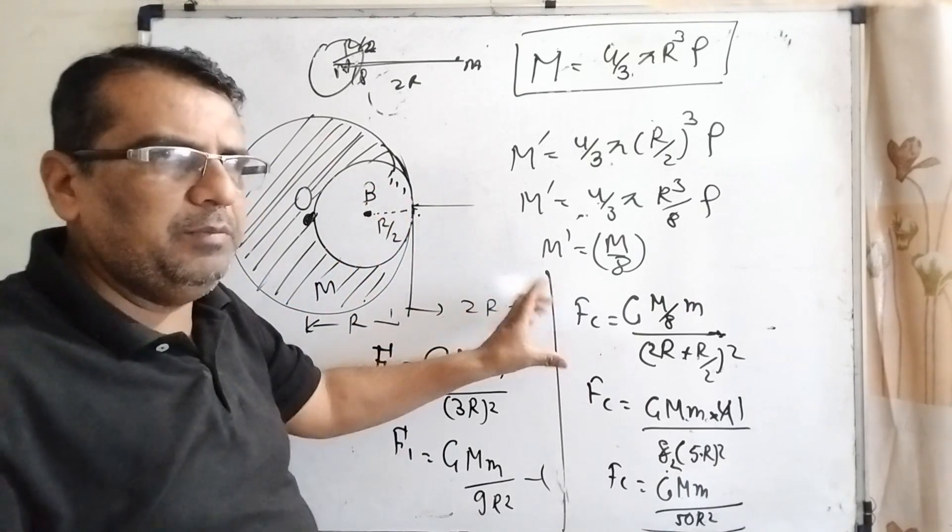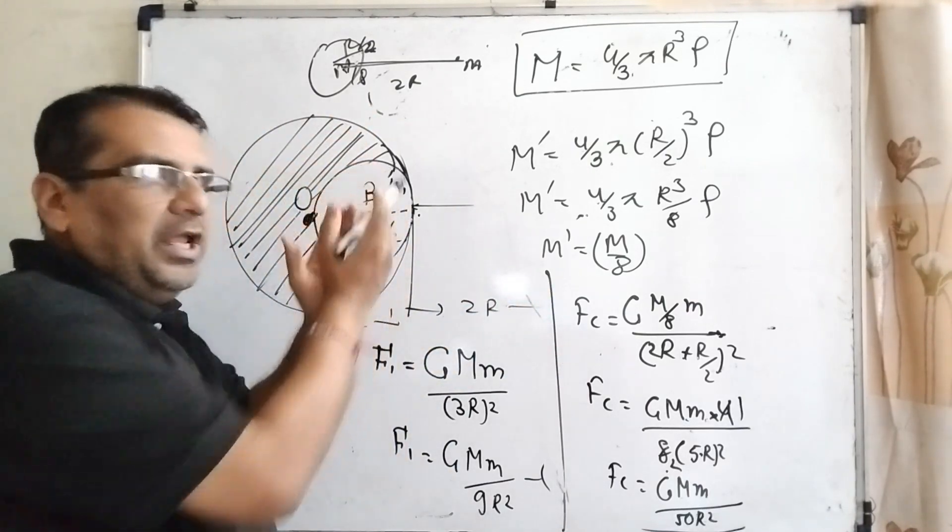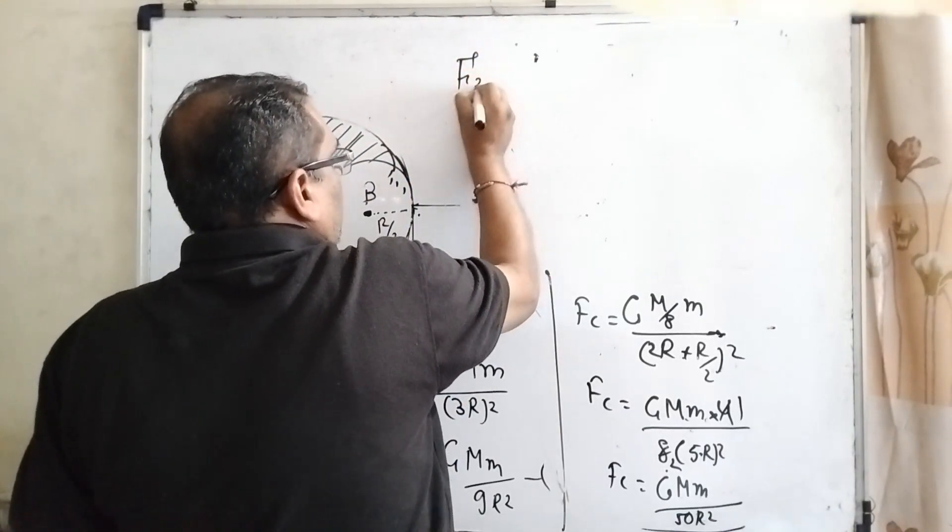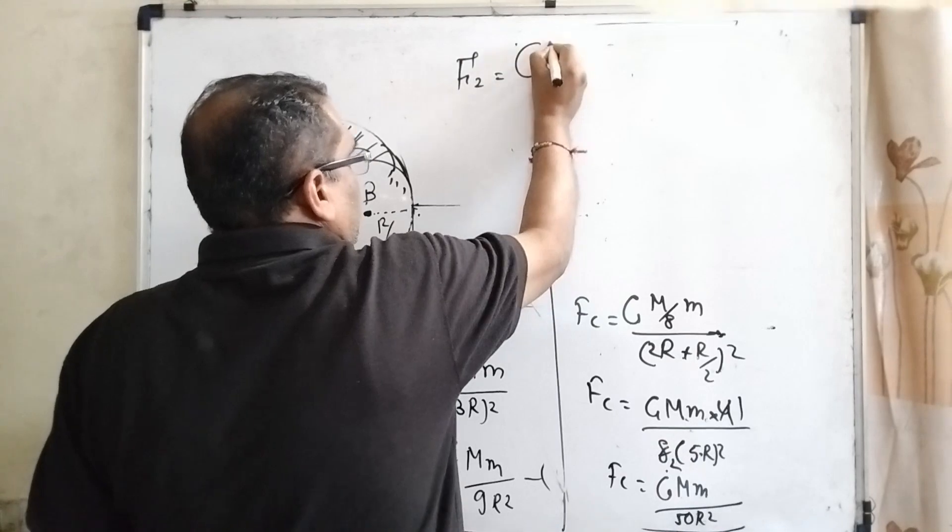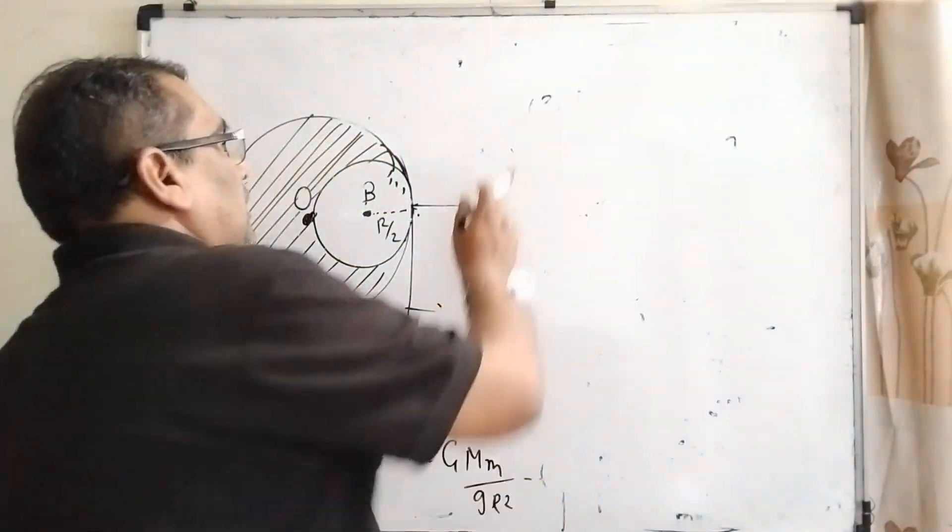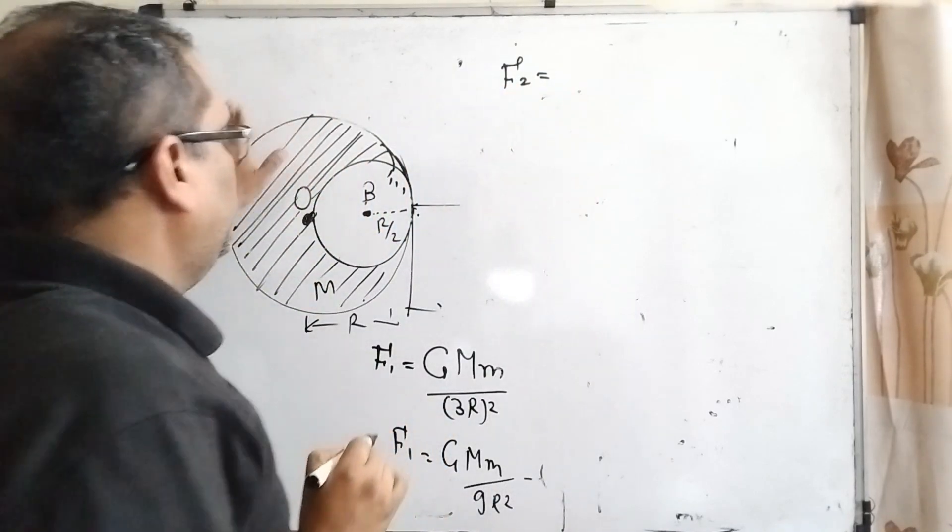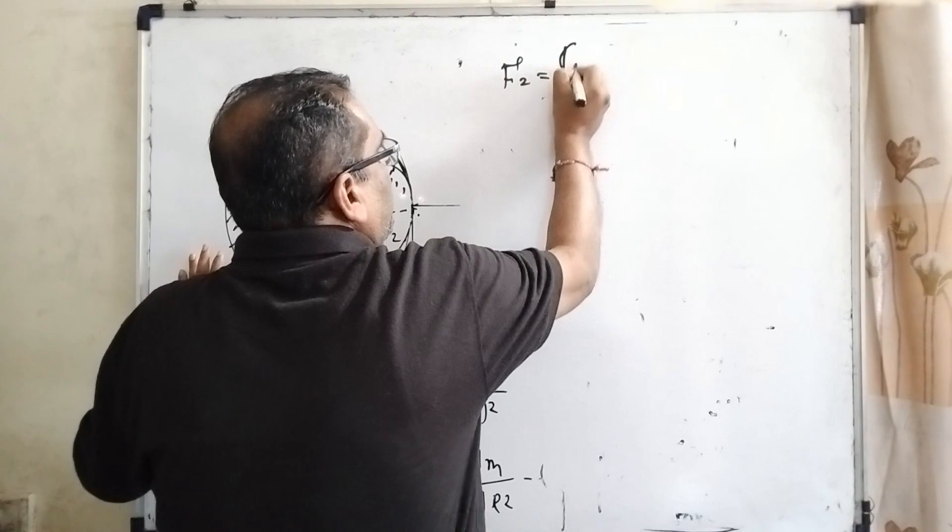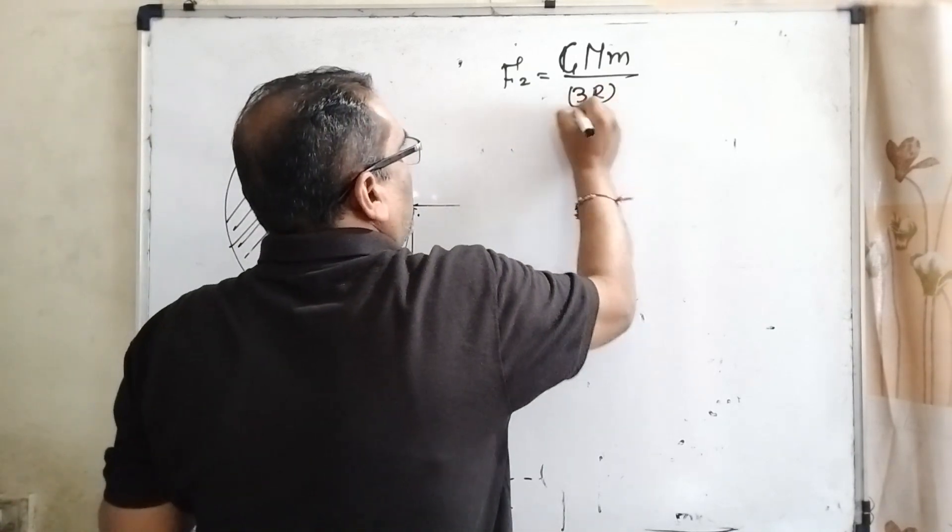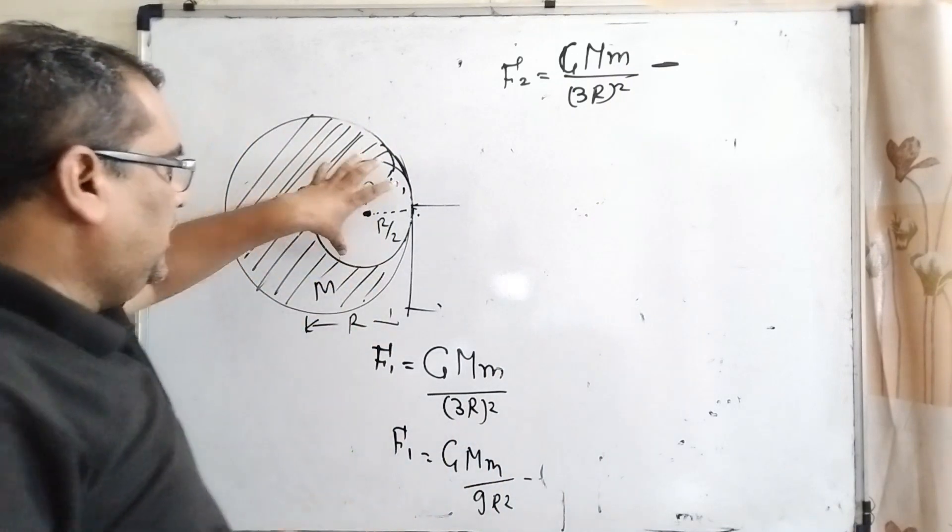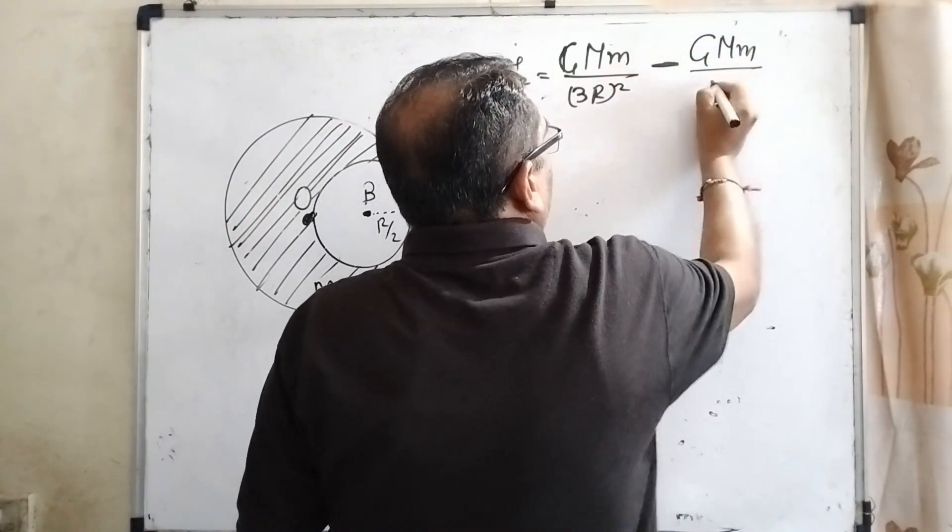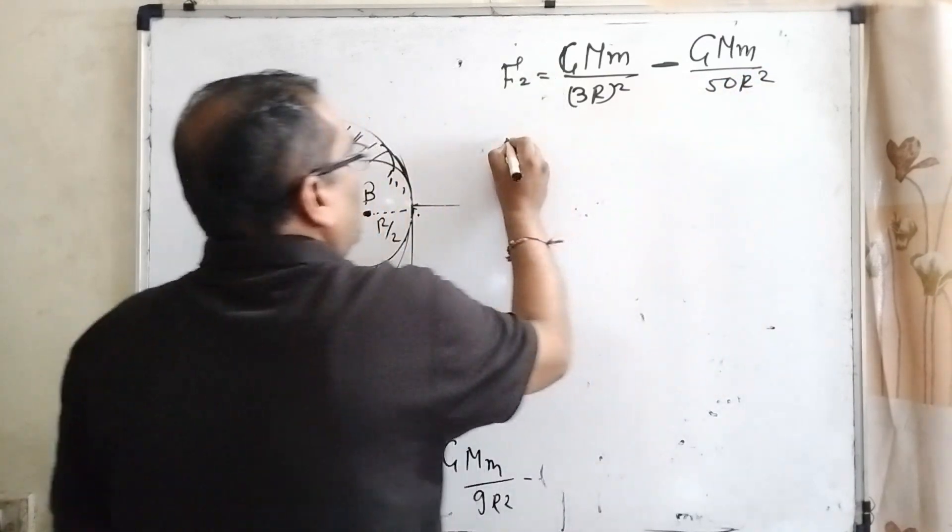Here, we have to consider for a while it is solid but it is not actually solid. Because we have taken it out. So therefore, gravity will be reduced. Then, what has become F2? Now, F2 equal to G capital M small m and the distance. Now, F2, the initial force G capital M small m and what is the distance from this particle, 3R whole square minus. This part will have to be taken out or we have to make the cavity. Then, what is the force? G M small m upon 50 R square.